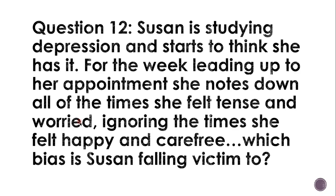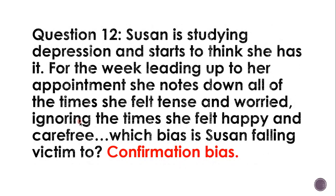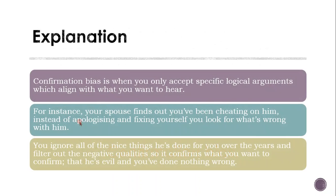Question twelve. Susan is studying depression and starts to think she has it. For the week leading up to her appointment, she notes down all of the times she felt tense and worried, ignoring the times she felt happy and carefree. Which bias is Susan falling victim to? Confirmation bias. Confirmation bias is when you only accept specific logical arguments which align with what you want to hear — for instance, your spouse finds out you've been cheating; instead of apologising, you look for what's wrong with them, ignore all the nice things they've done, and filter to confirm that they're evil and you've done nothing wrong.